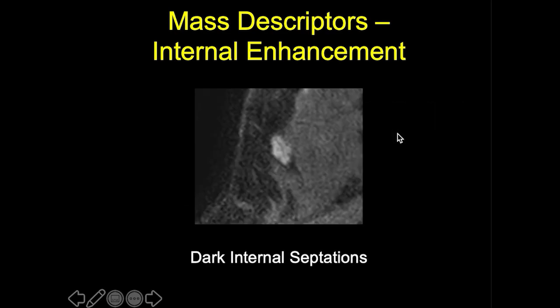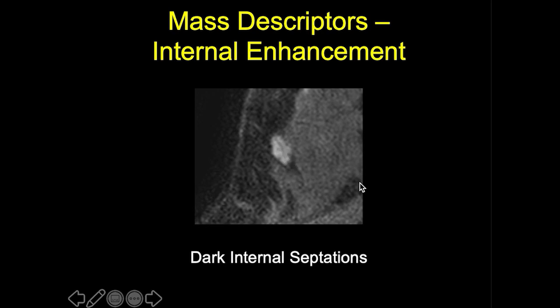There is also a special case of dark internal septations, which is suggestive of fibroadenoma. On the post-contrast sequence, we can see an oval circumscribed mass with a dark internal septation. As an isolated feature, the negative predictive value of dark internal septations is insufficient to exclude malignancy. However, if this is also a T2-bright mass with benign enhancement characteristics, this is likely a fibroadenoma.